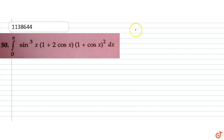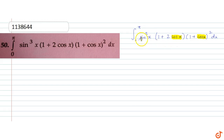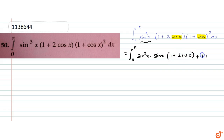We need to find the integral from 0 to π of sin³x times (1 + 2cosx) times (1 + cosx)² dx. We have cos terms here and cos terms here, so we can try to convert and use a substitution. We split sin³x into sin²x times sinx, keeping the rest the same: multiplied by (1 + 2cosx)(1 + cosx)² dx.